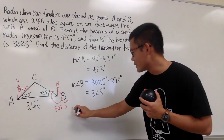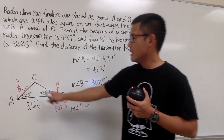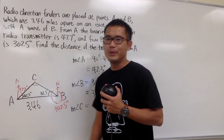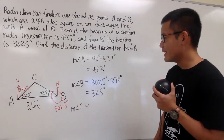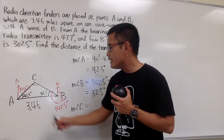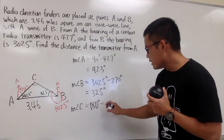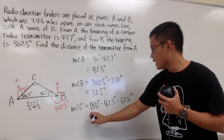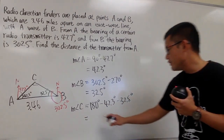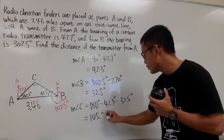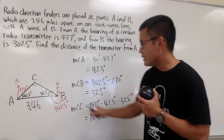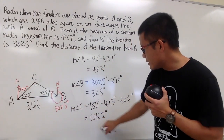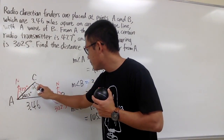Finally, we find angle C. Since C and side c match, we can use the Law of Sines. The measure of angle C is 180 minus 42.3 minus 32.5, which gives 105.2 degrees. Notice this is not a right triangle because angle C is 105.2 degrees.